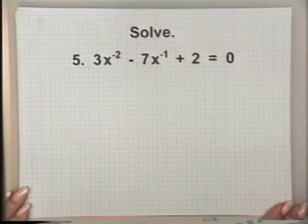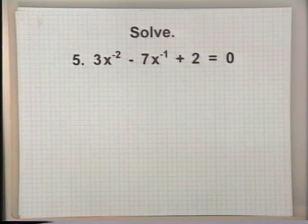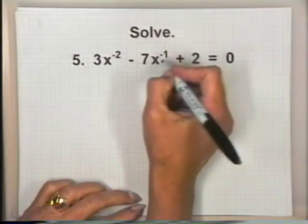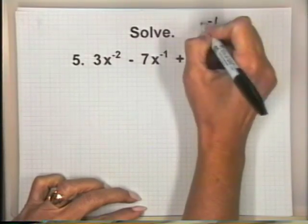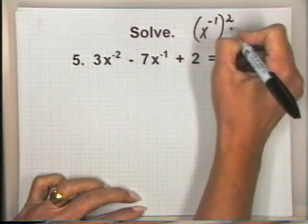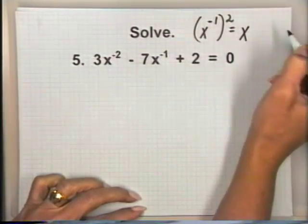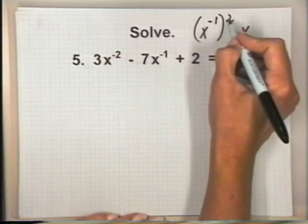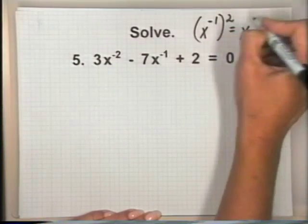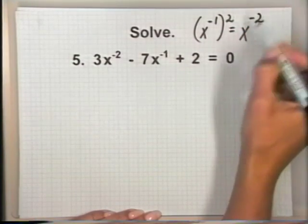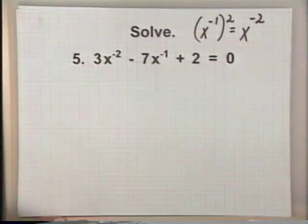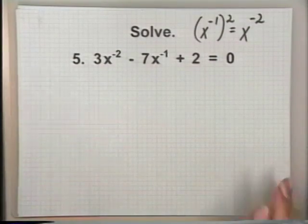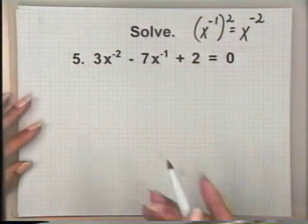For problem number 5, is the equation 3x to the negative second power minus 7x to the negative first power plus 2 equals 0 an equation in quadratic form? We analyze the variable part of the second term: x to the negative one. If we square it, using the power of a power rule, negative 1 times 2 is negative 2, which gives x to the negative second — the variable part of the first term. Yes, this is an equation in quadratic form.